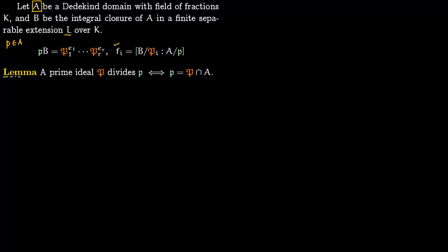First lemma — and this lemma is kind of tautological. The prime ideal P divides p. That P divides p essentially means that this capital P occurs in the factorization of the smaller p, so P divides p just means that statement.